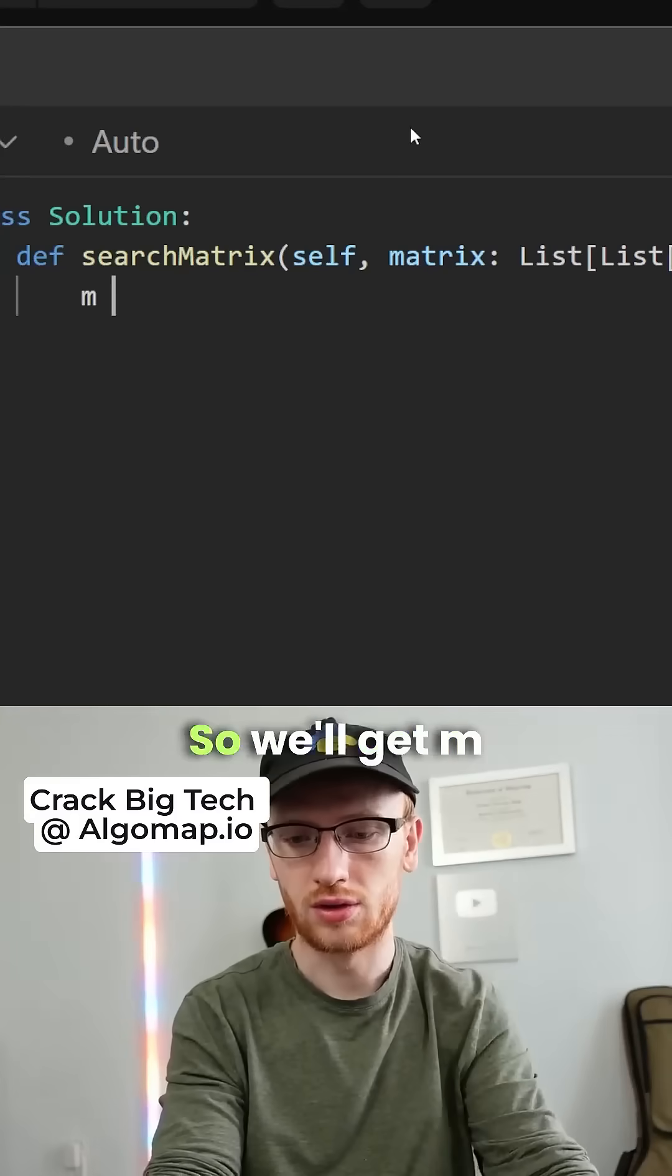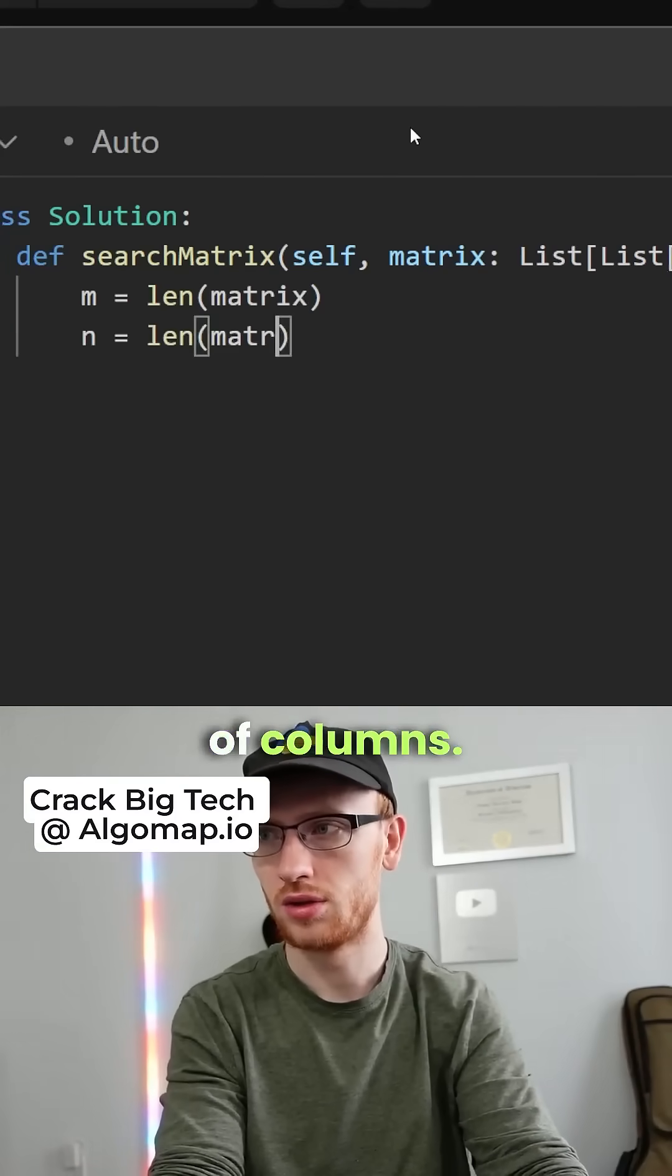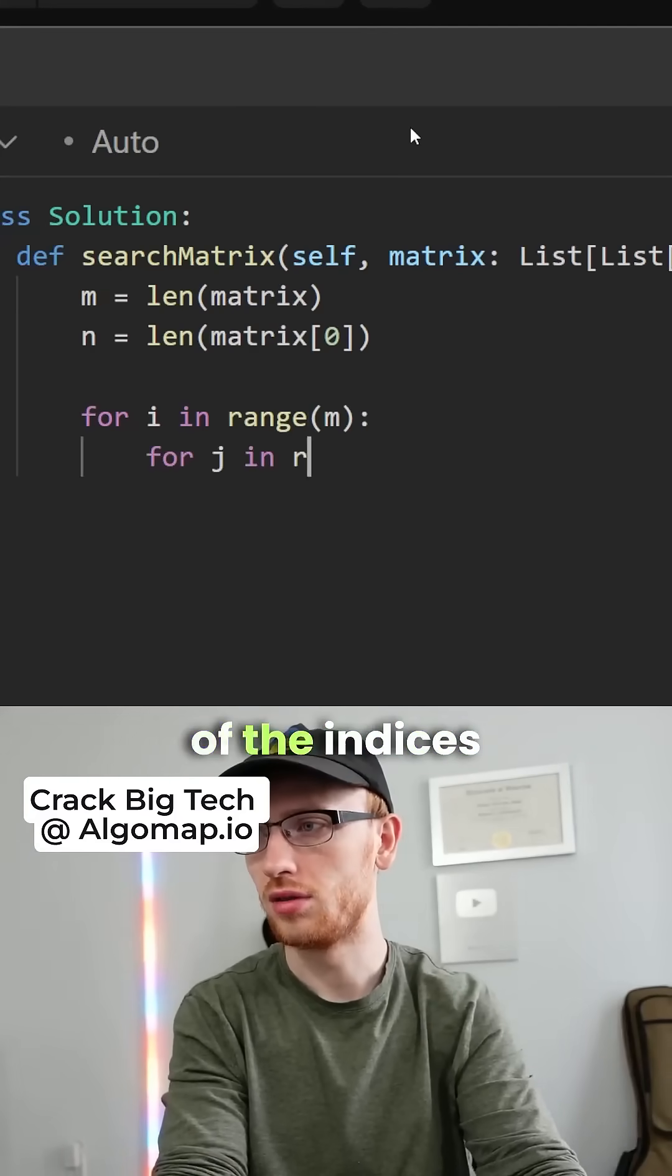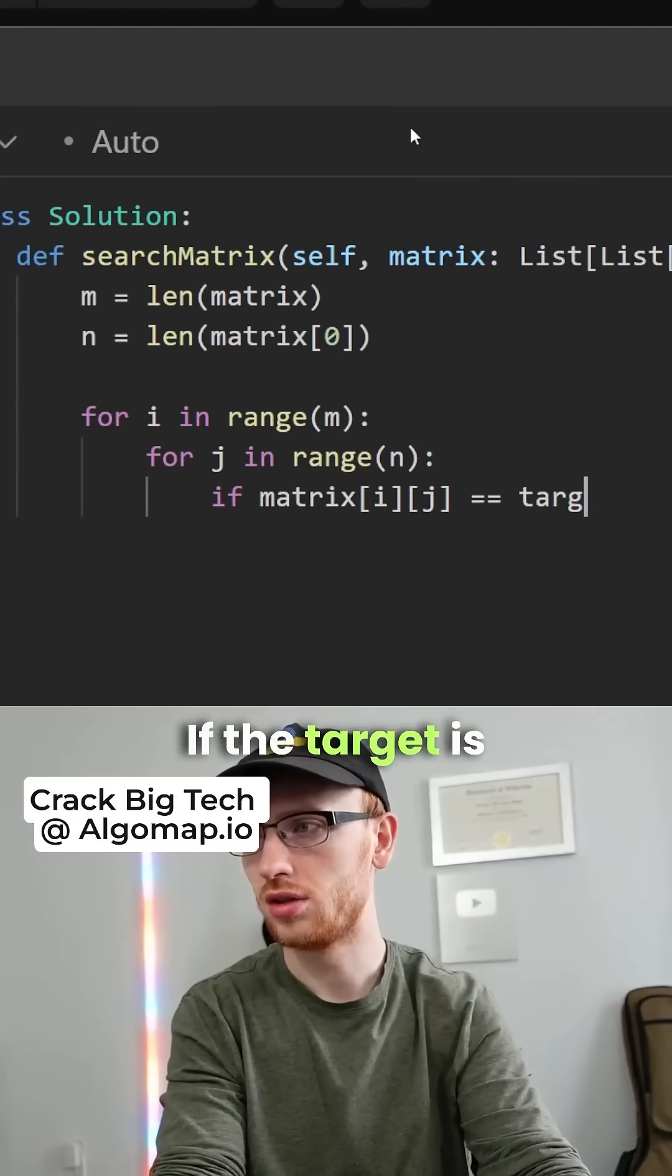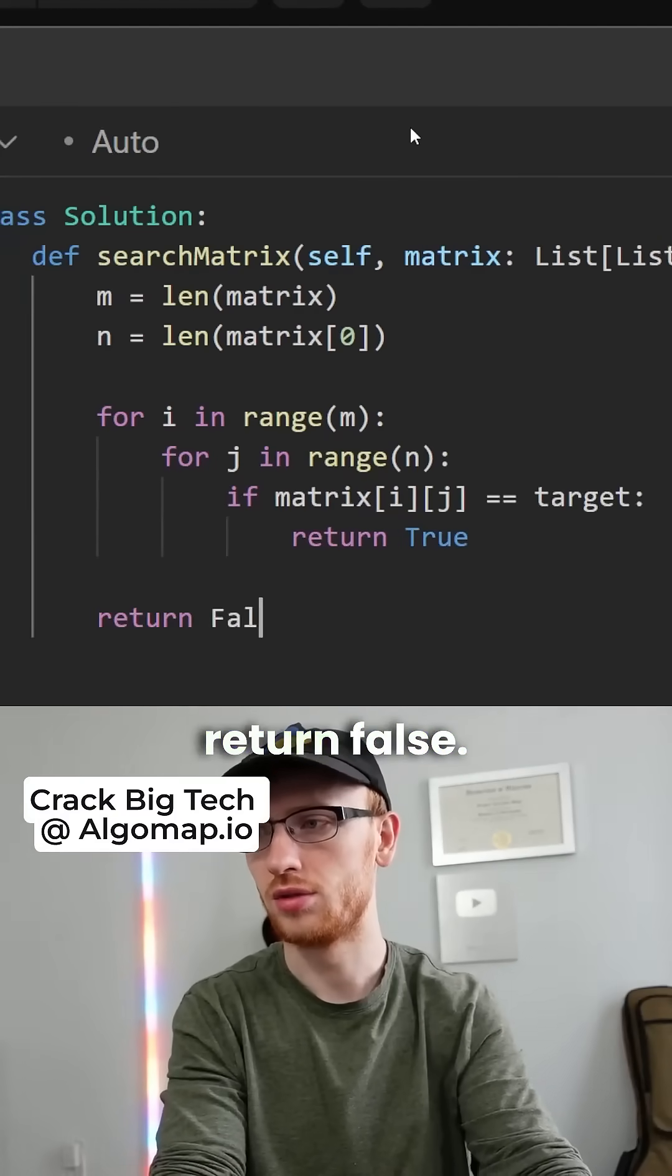Okay, that was exhausting. We'll get m as the number of rows and n as the number of columns. Since I'm a noob programmer, I'm going to loop through all of the indices in the array. That's going to be big O of t, where t is the number of elements. If the target is found, return true. If we escape all of this, return false.